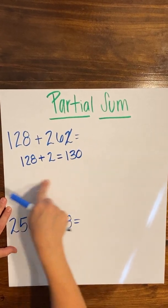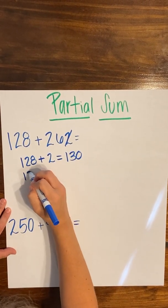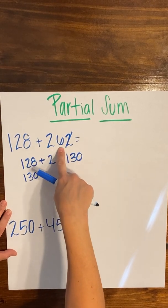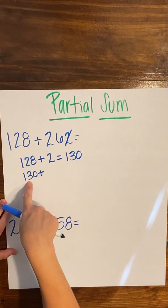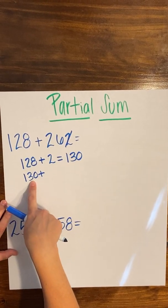So I'm going to bring this sum down and that's going to be my first addend. And I know that I have 260 left to add. So I'm going to go ahead and add the six and the three because I know that's going to give me nine in the tens place.